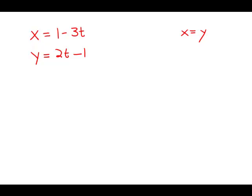If x equals 1 minus 3t and y equals 2t minus 1, then for what value of t does x equal y? We're going to use this equation to our advantage. We're going to plug into this equation. If x equals y, that means that what x equals, 1 minus 3t, must be equal to what y equals, 2t minus 1. We merely substituted the other two equations into this equation.